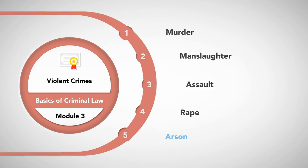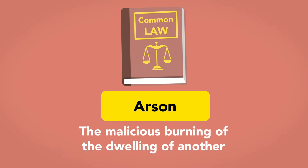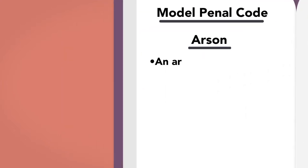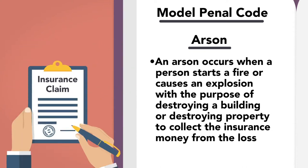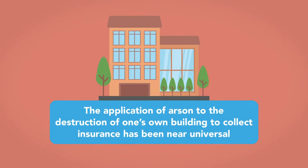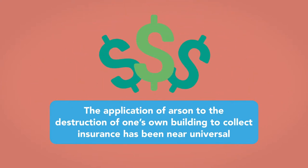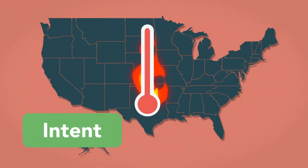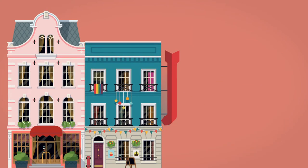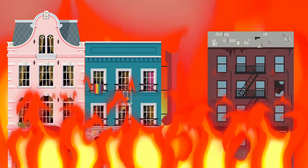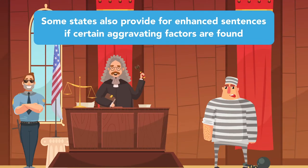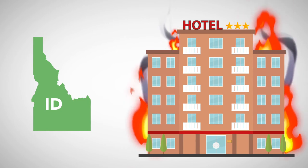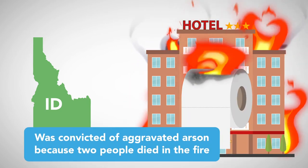Arson. Under the common law, arson was defined as the malicious burning of the dwelling of another. Under the slightly expanded Model Penal Code definition, an arson occurs when a person starts a fire or causes an explosion with the purpose of destroying a building or destroying property to collect insurance money from the loss. The application of arson to the destruction of one's own building to collect insurance has been near universal. Some states classify arson by degrees, depending on the defendant's intent and the risk to human life. Burning a building where people are known to be present is more serious than burning an abandoned building. In the state of Florida, the difference between first-degree arson and second-degree arson relates to whether the structure was occupied. Some states also provide for enhanced sentences if certain aggravating factors are found. For example, an Idaho defendant who started a hotel fire by lighting a roll of toilet paper in the bathroom was convicted of aggravated arson because two people died in the fire.